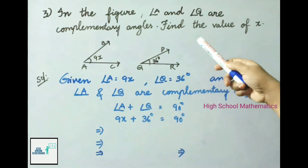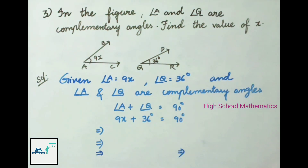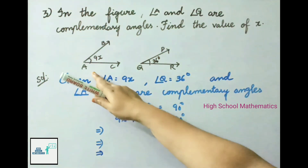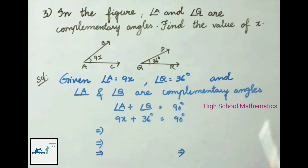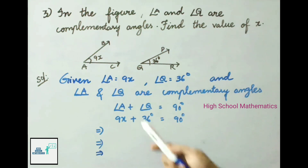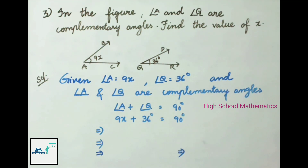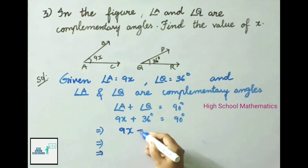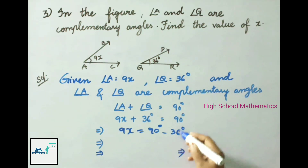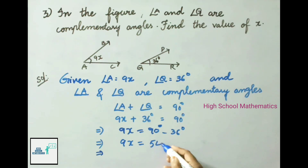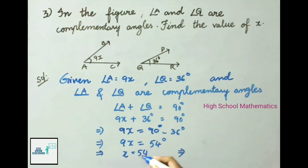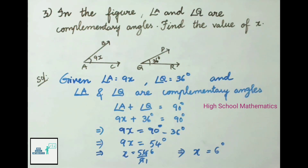Question number 3: in the figure, angle A and angle Q are complementary angles. Find the value of X. Given angle A equals 9X and angle Q equals 36 degrees. Since they are complementary, angle A plus angle Q equals 90 degrees, so 9X plus 36 degrees equals 90. Transposing: 9X equals 90 minus 36, that is 54 degrees. So X equals 54 divided by 9, which is 6 degrees. Therefore the value of X is 6 degrees.